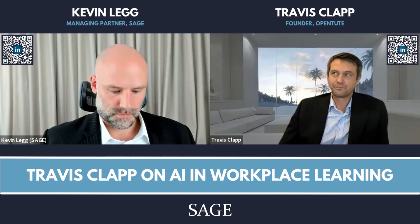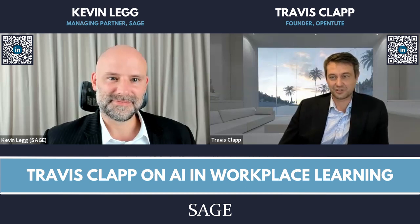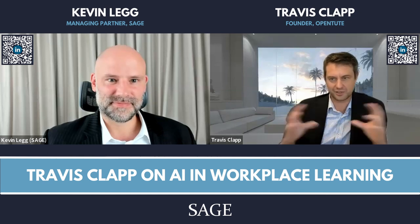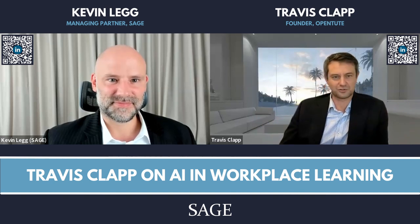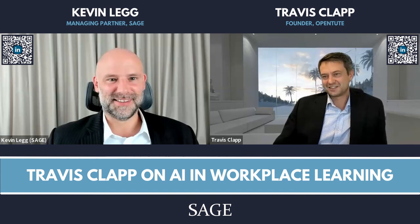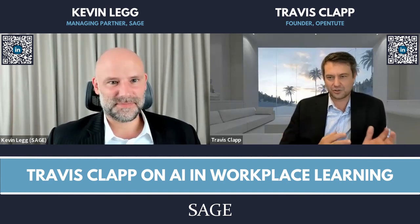I tried asking ChatGPT to use Harvard referencing and give me at least seven resources. It did it beautifully — like an essay from a master's degree — but when I checked all the references, every one was just made up. Even the links were made up; you click them and they don't exist. That's improving — there are Chrome plugins that search the web for real references. I've also tried the Bing AI search version, and Google's Bard is coming out too. So that's what ChatGPT is.